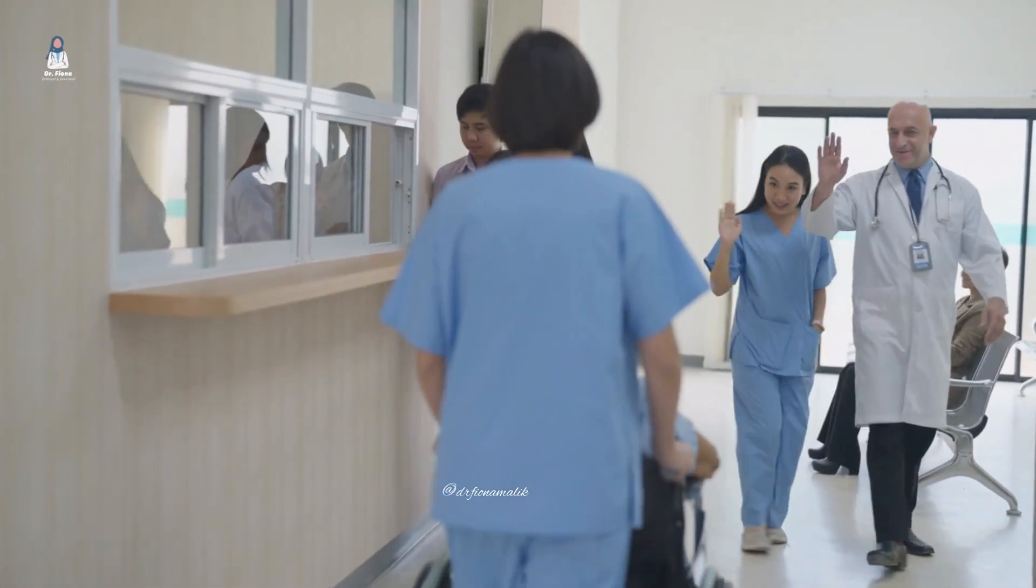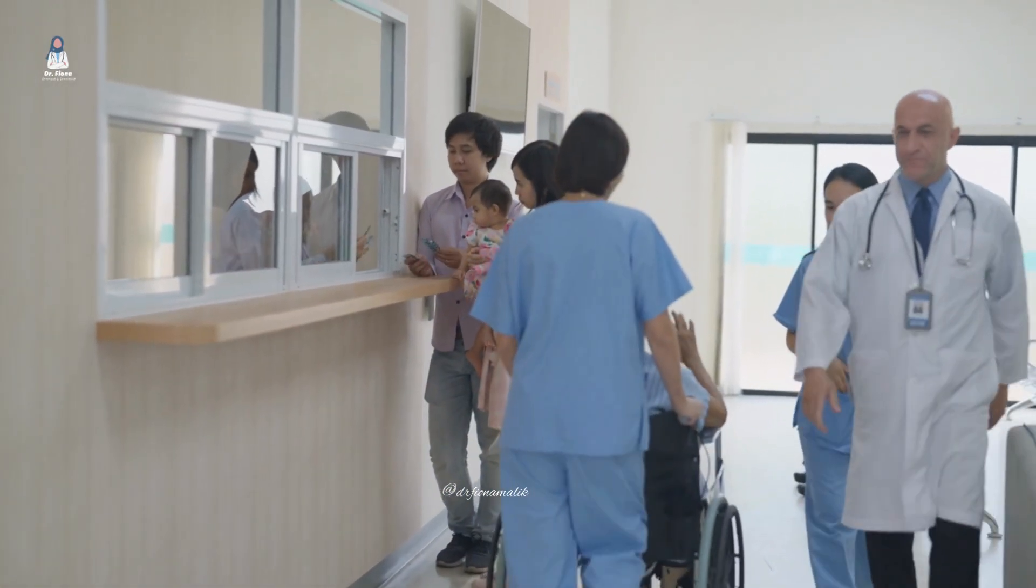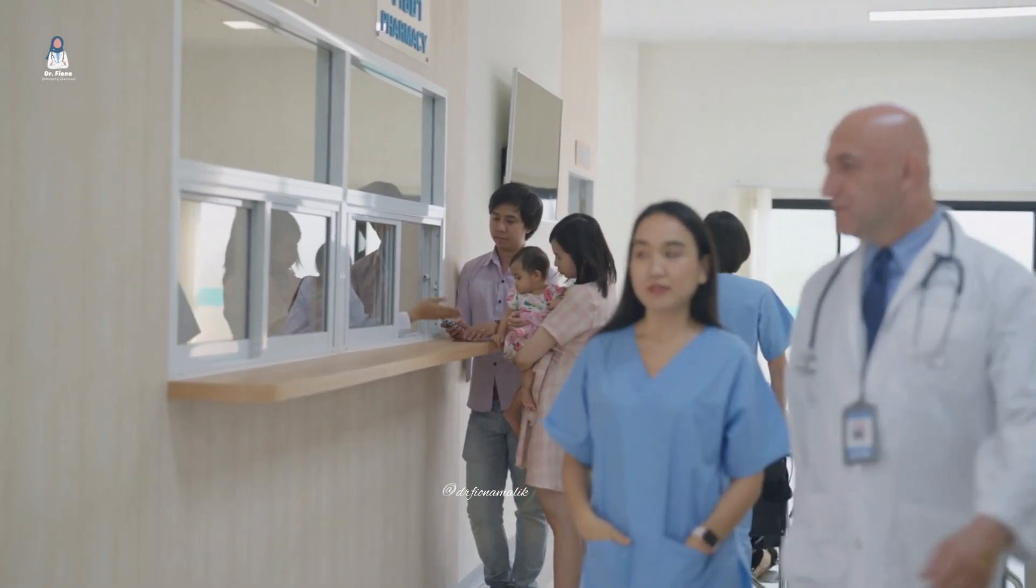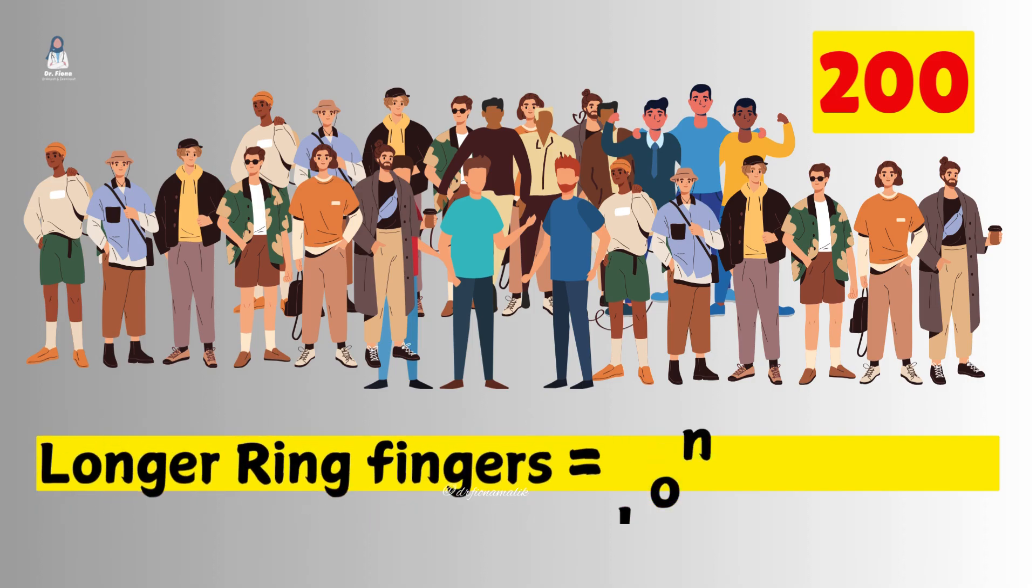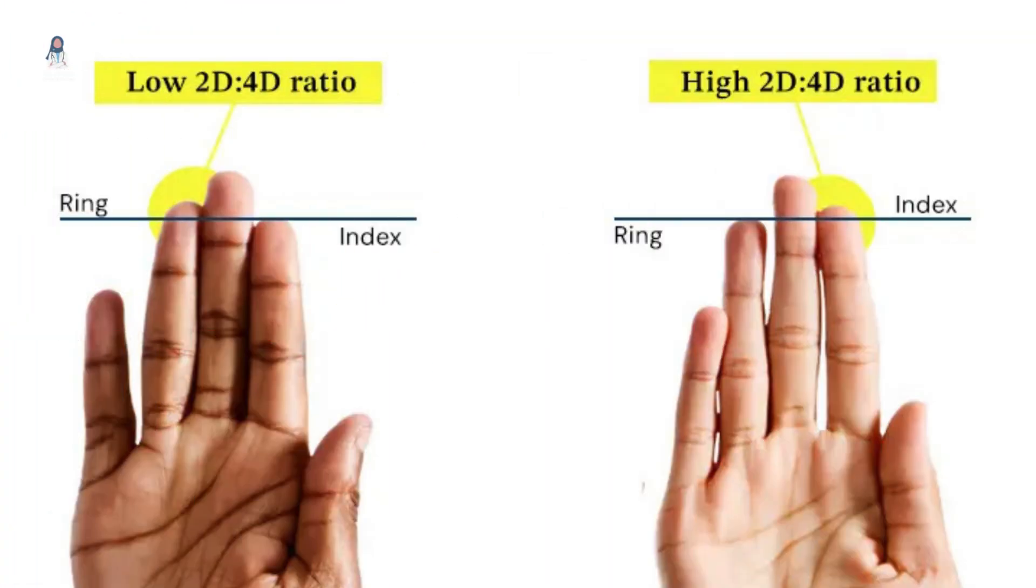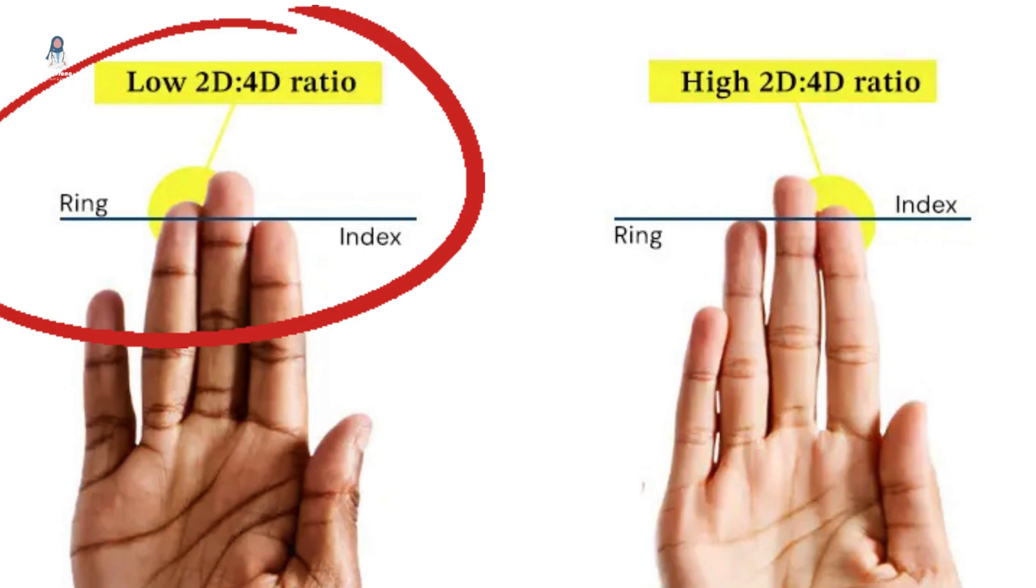They measured about 200 men of all age. What they found was that men with longer ring fingers tend to have longer penises. So, one more thing. You know, this 2D to 4D ratio isn't just connected to penis size, but also with something else.